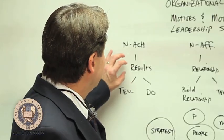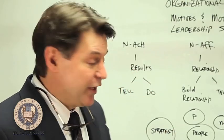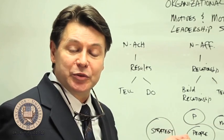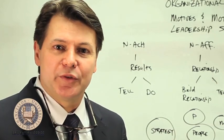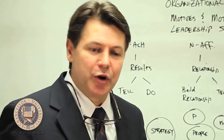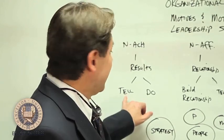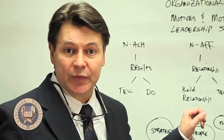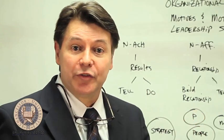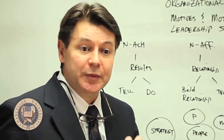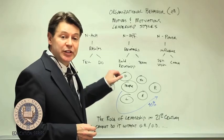A high need for achievement person, who focuses on results, will typically have a leadership style of telling others what to do — very directive, very coercive: 'Here's what I want you to do, do it now.' We call that a telling style. A secondary style from a results-oriented leader is that they do it themselves — these are the type of leaders who, if you're not doing it fast enough, will just do it themselves.